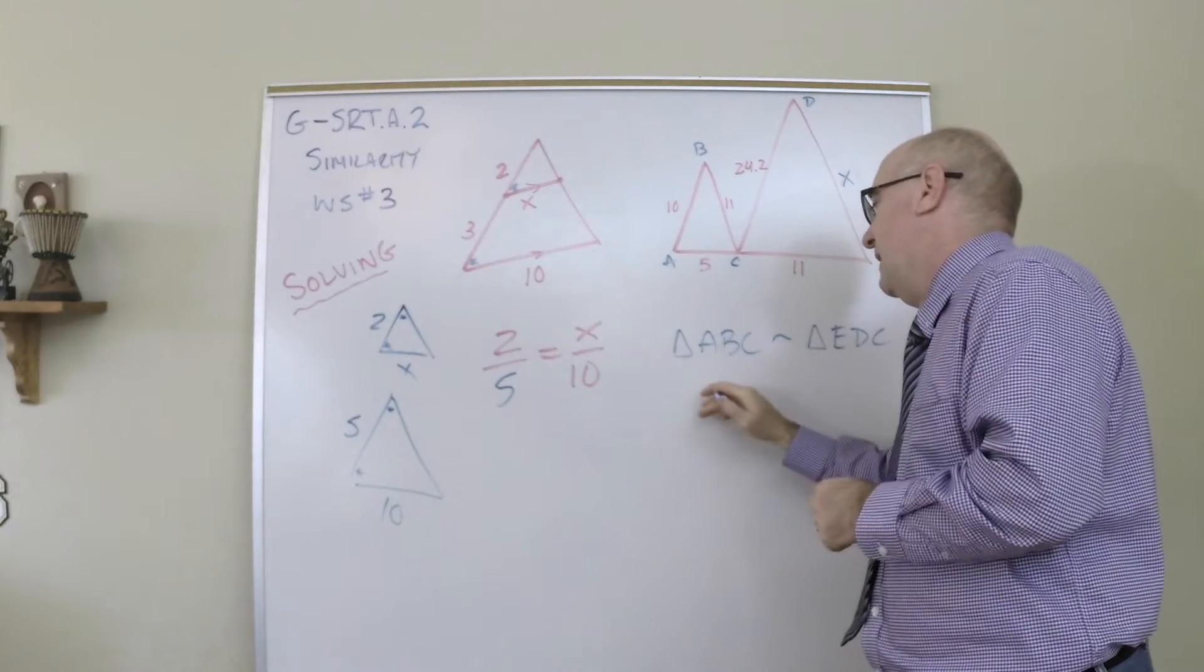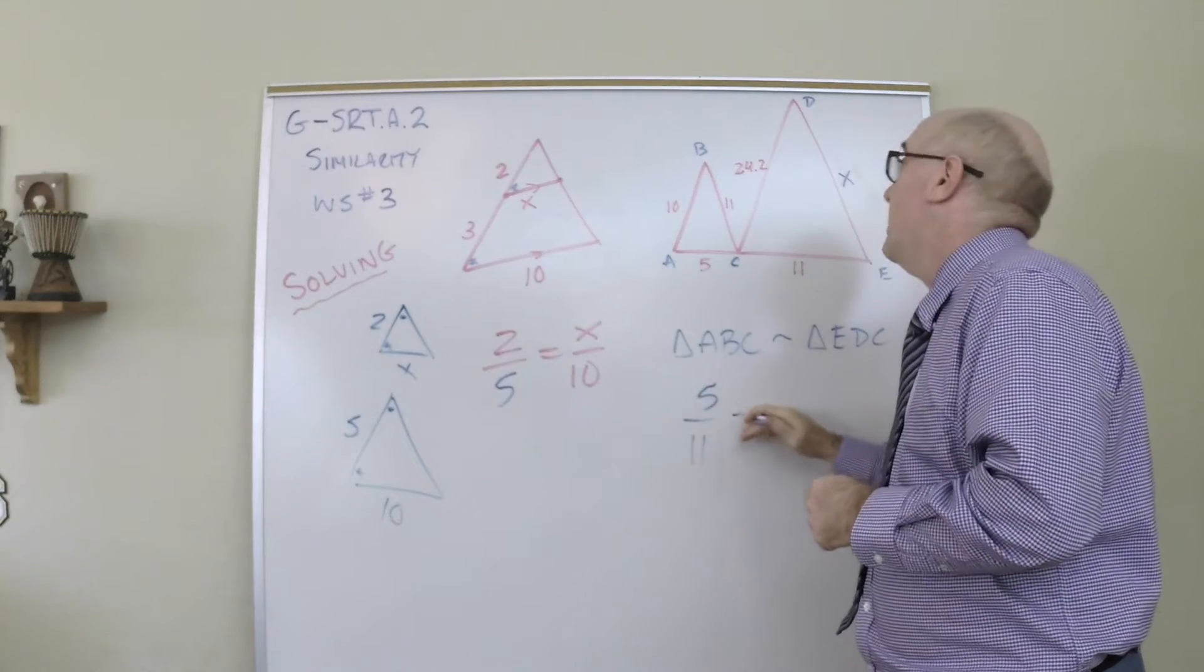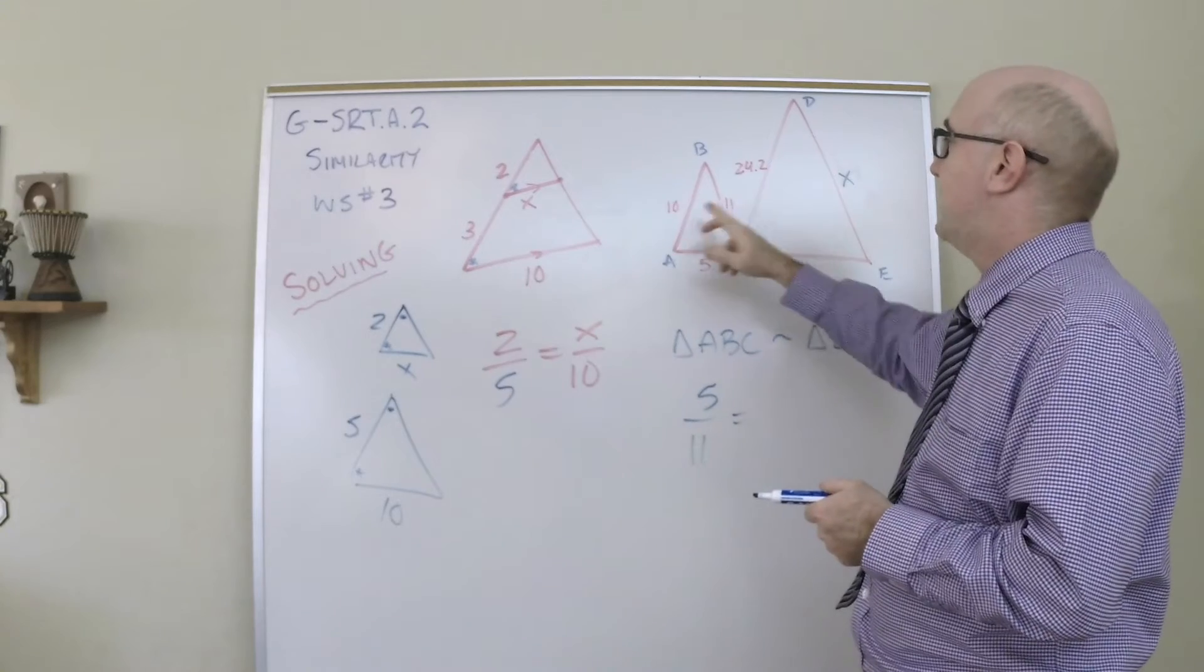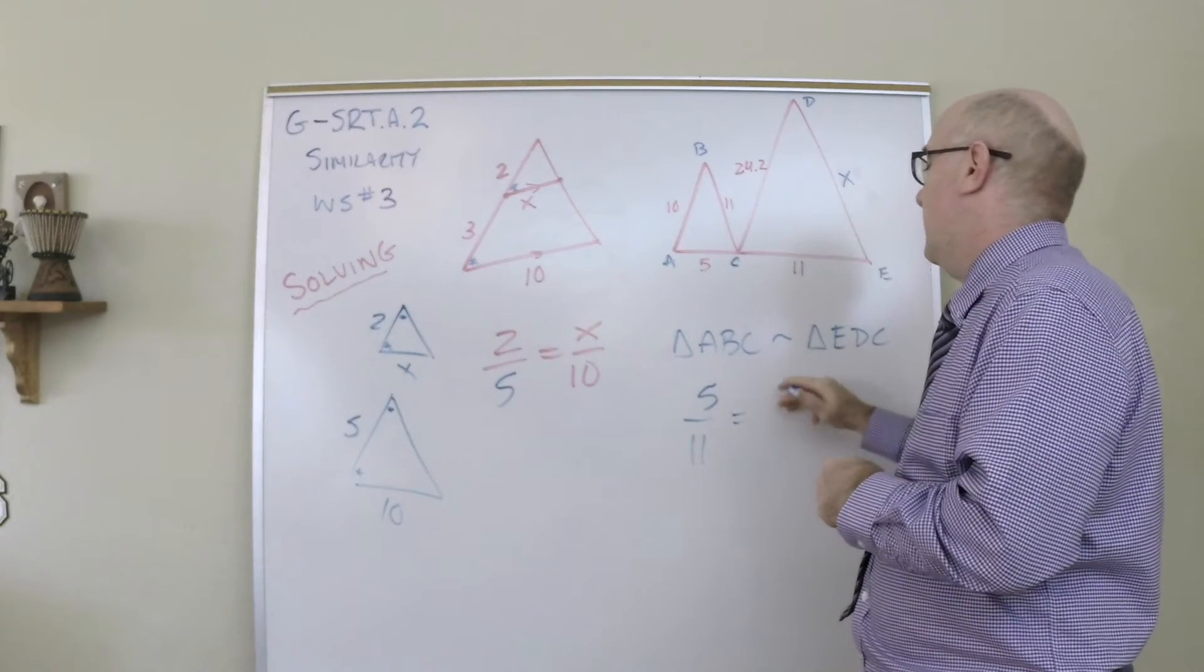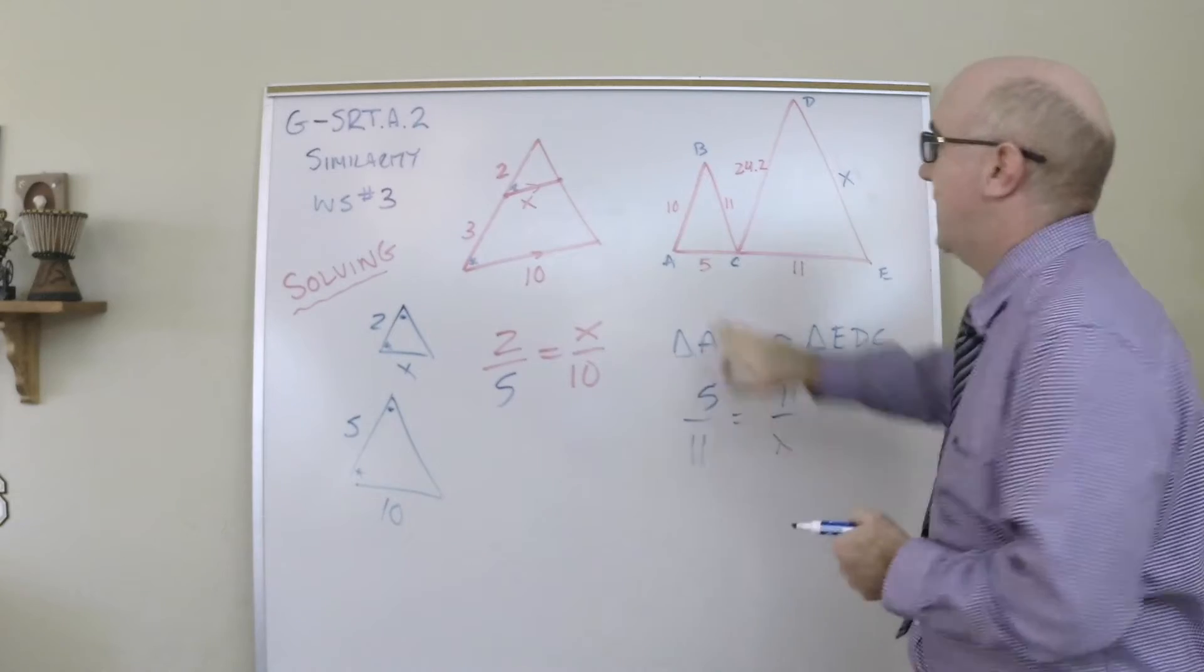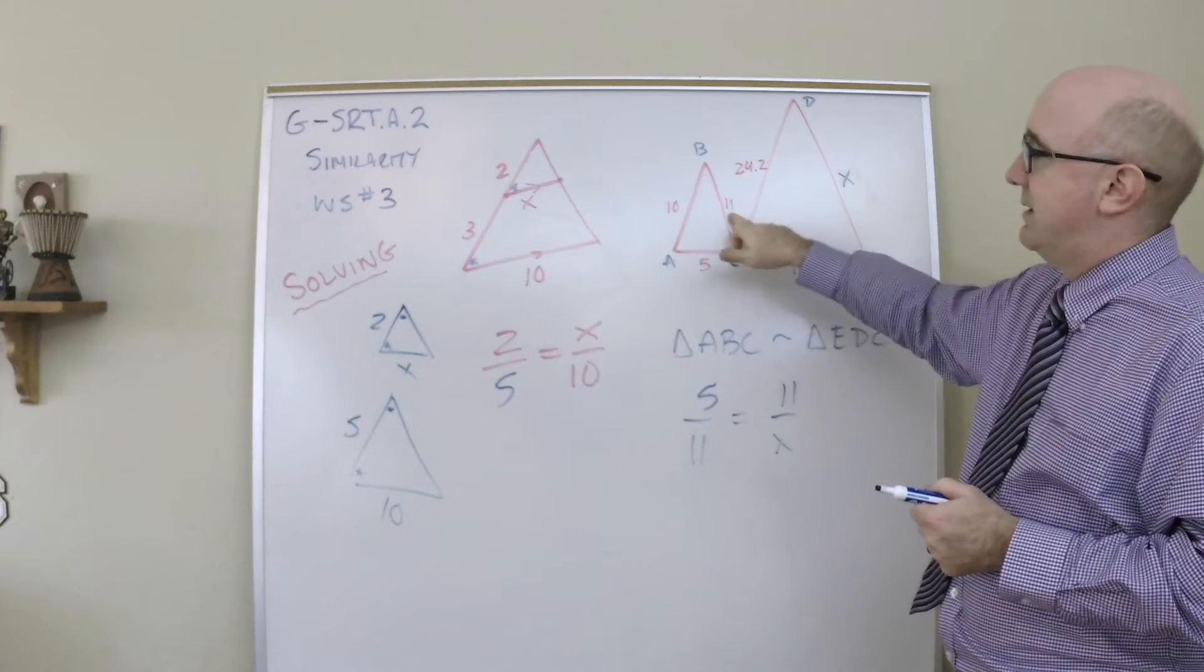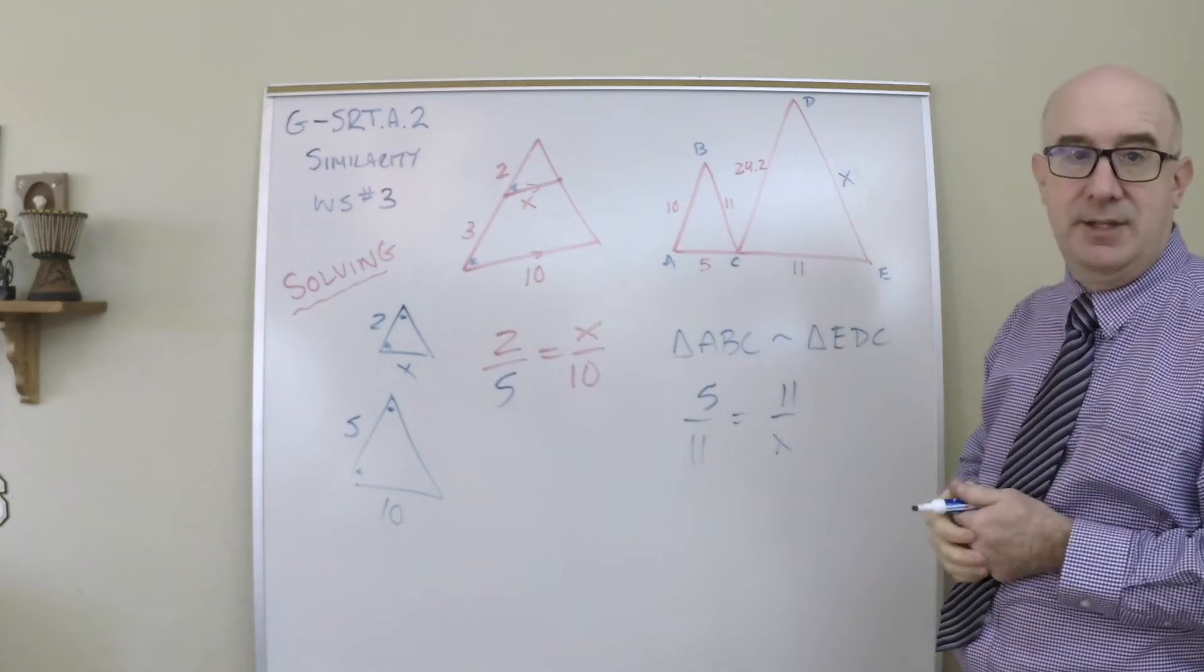So students will go, I see five is to ten, no problem there. And they'll say, let's see, eleven is to x. So they're saying the five is to this eleven as this eleven is to this x, and they solve.